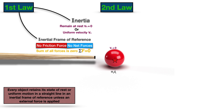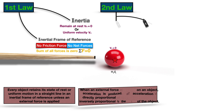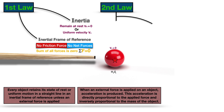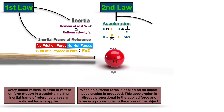Newton's second law of motion states that when an external force is applied on an object, acceleration is produced. This acceleration is directly proportional to the applied force and inversely proportional to the mass of the object, and from this we get the formula to calculate the external force, which is equal to mass times acceleration.